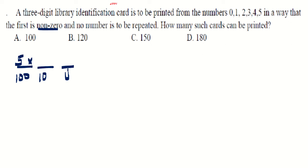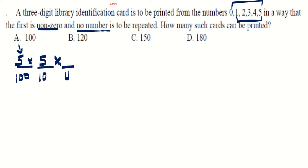For the tens place: one number is already written in the hundreds place, so we don't repeat it. From six digits, one is taken, leaving five for the tens place — this time zero is included. For the units place, two numbers are already taken, so four digits remain. Multiplying: 5 × 5 × 4 = 25 × 4 = 100. So 100 such cards can be printed.